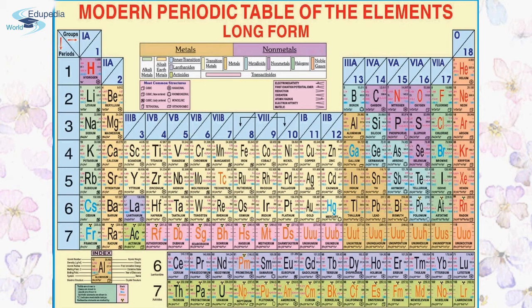The density of an element also depends on factors such as atomic radii, nuclear charge, number of bonding orbitals, overlap of orbital energies, and crystal forms. Regarding group trends, although there is no strict trend, density tends to increase as you go down the group, but there are variations in each group. For example, in Group 1 — lithium, sodium, potassium, rubidium, cesium, and francium — density keeps increasing from lithium to sodium.